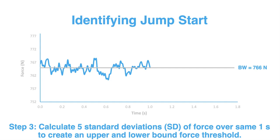That five standard deviation threshold is used because of the work of Owen et al. in 2014. If you haven't checked out that paper, I'll put the link in the description — go and check it out, because it is a criterion method for calculating different parameters from a countermovement jump force-time trace, published in the Journal of Strength and Conditioning Research.